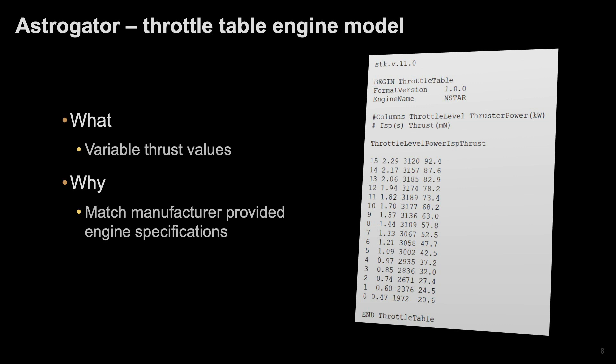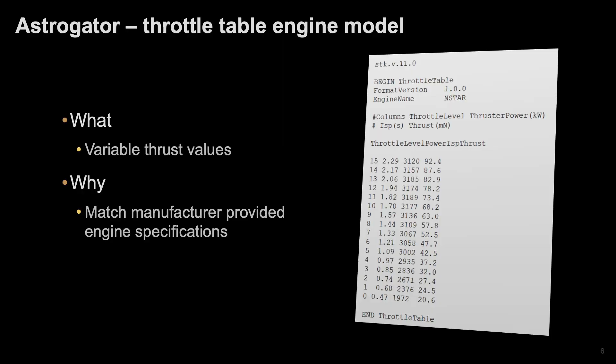The additional Astrogator feature is the ability to add a throttle table engine model. If you're modeling a specific spacecraft and its ability to maneuver in orbit, typically a manufacturer of that spacecraft will provide you with a thrust table that defines the performance of that engine based on different settings.